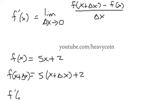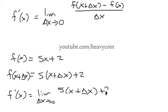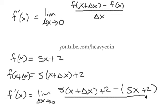f prime of x is equal to the limit of delta x approaching zero. Now I'm going to take this whole piece. So 5 times x plus delta x plus 2 minus our f of x. I'm going to start a parenthesis here because of this minus sign. So the f of x is 5x plus 2, and that is all over delta x.